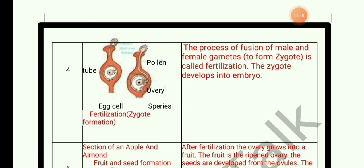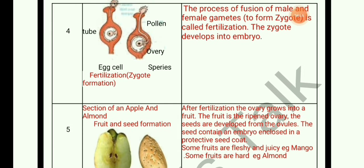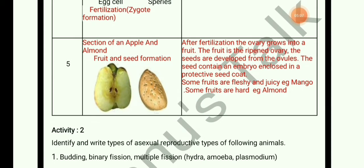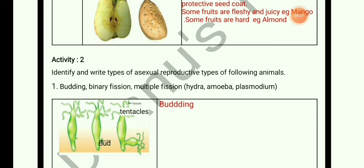Fertilization is the process of fusion of male and female gametes, resulting in zygote formation. The zygote develops into an embryo. After fertilization, the ovary grows into a fruit — the fruit is the ripened ovary. Seeds are developed from ovules. The seed contains an embryo enclosed in a protective seed coat. Some fruits are fleshy and juicy like mango; some are hard like almond.